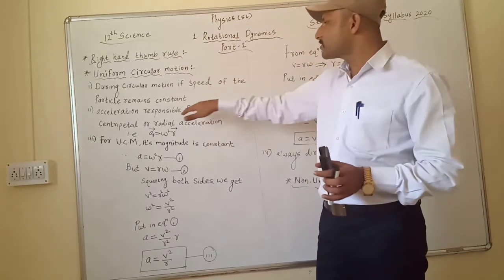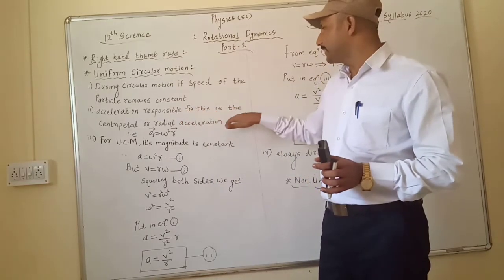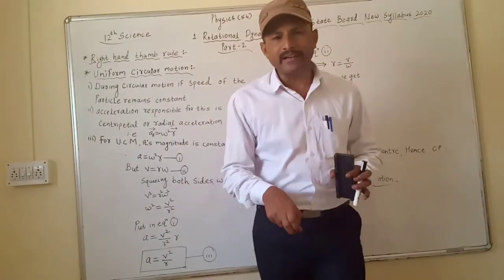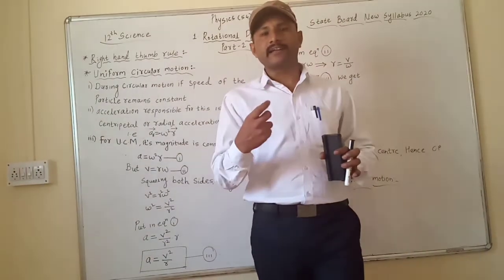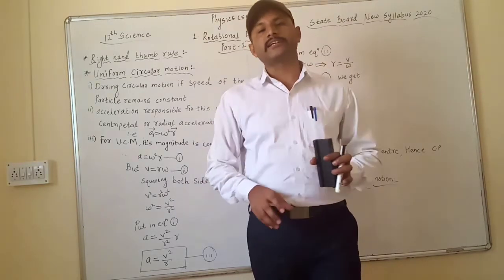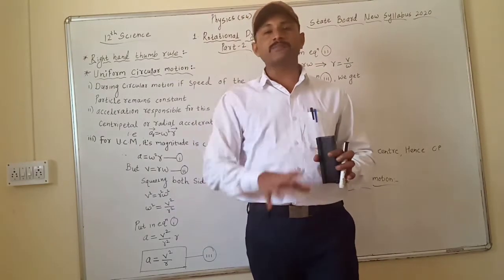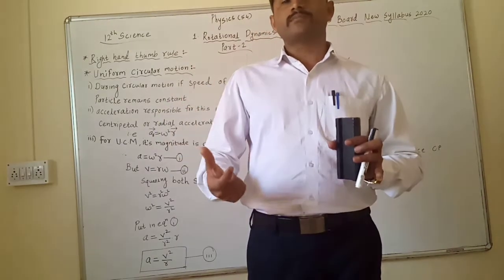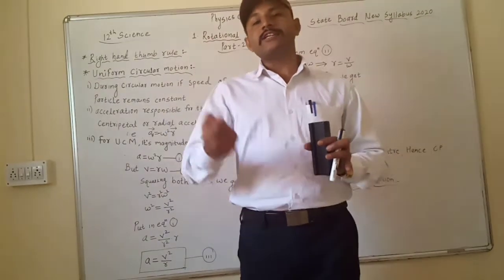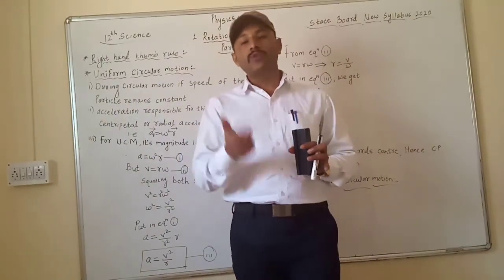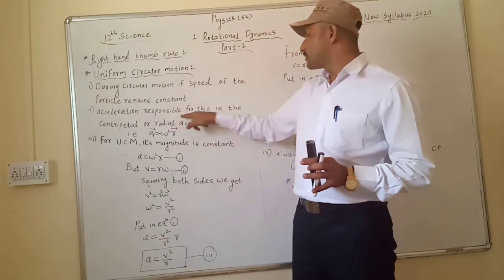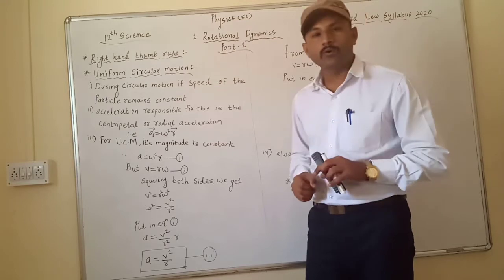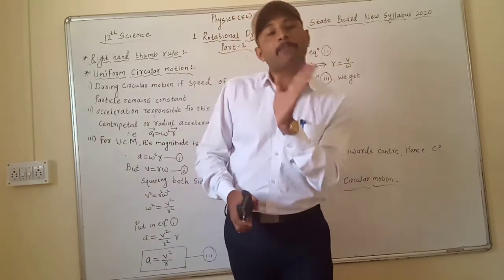The acceleration responsible for circular motion is the centripetal acceleration. When the particle moves towards the centre of the circle, that is centripetal force. When it moves away from the centre, that is centrifugal force — directed in the opposite side.